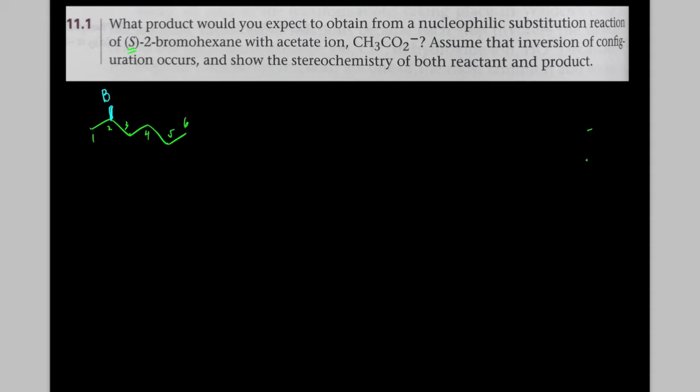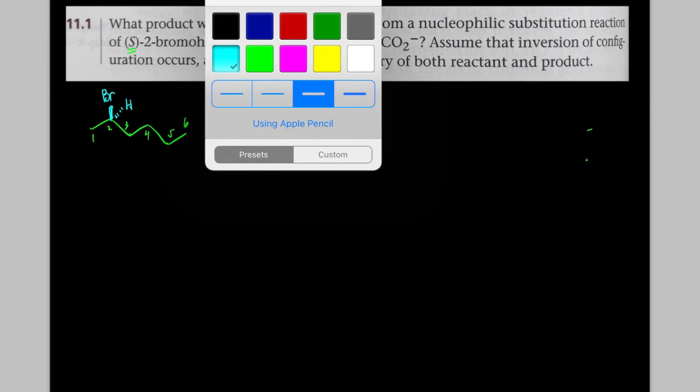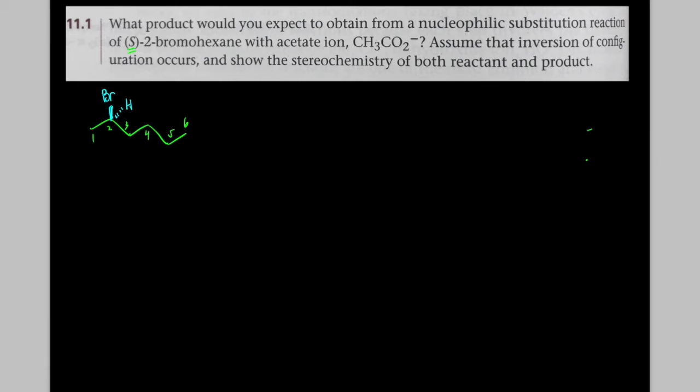So we'll put the bromine on a wedge, and we'll put a hydrogen on a dash, and then what I need to do is prioritize things. So bromine is definitely super heavy. Hydrogen is super light. This carbon and this carbon tie, but the carbon on carbon-3 is connected to more carbons. So that's number two, and this is number three. And if I look at this, it goes clockwise, which is R.